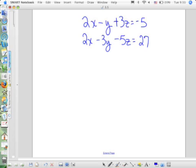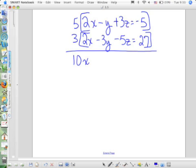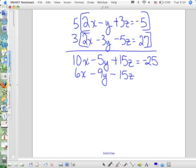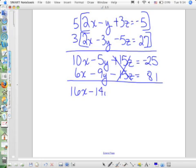What do I have to do to get rid of it this time? Multiply the top by 5 and the bottom by 3. It's already plus and minus. Okay? So, I've got 10X minus 5Y plus 15Z equals negative 25. 6X minus 9Y minus 15Z equals 81. And again, your Zs are gone. It doesn't have to be Z. But whichever one you get rid of the first time, you have to get rid of it again the second time. You have to stick with the same letter. So, now we have 16X minus 14Y equals positive 56.